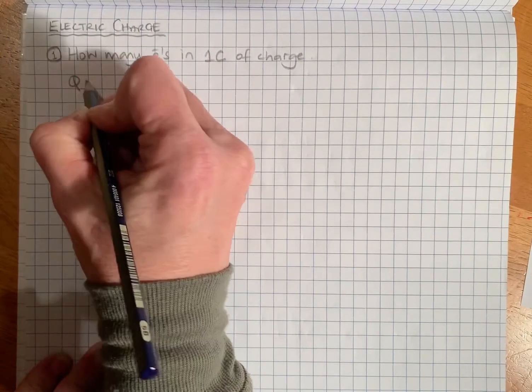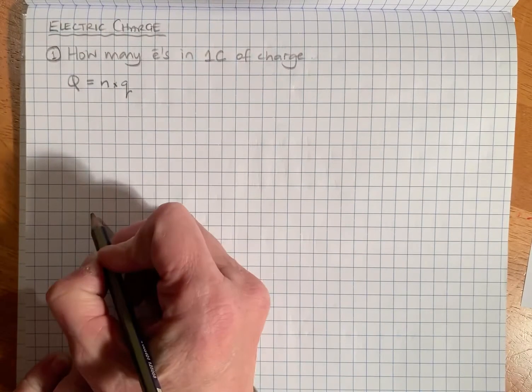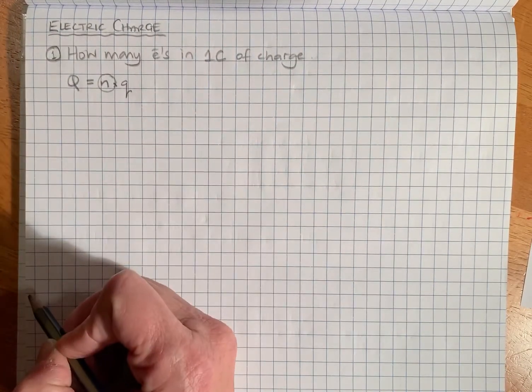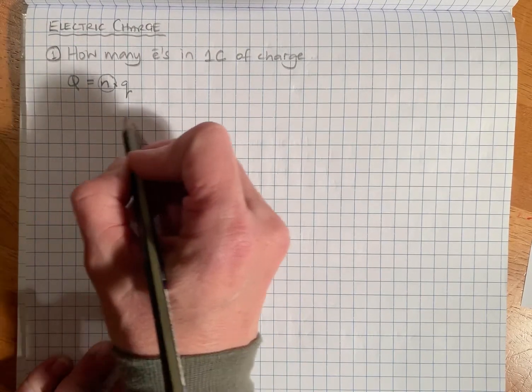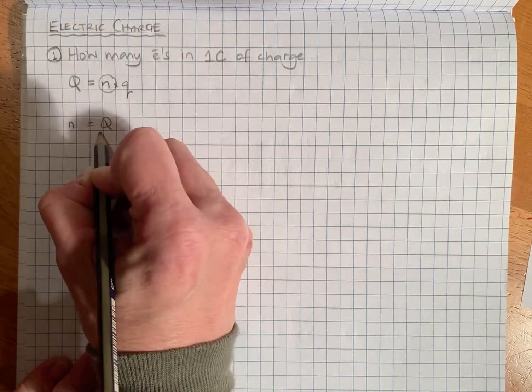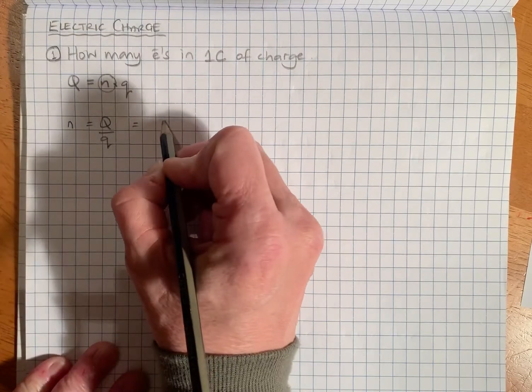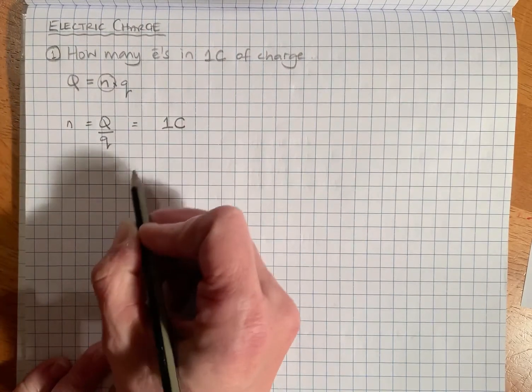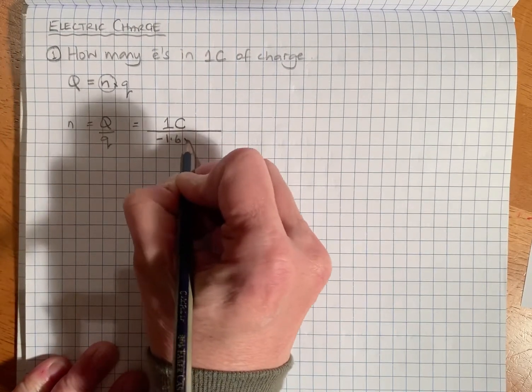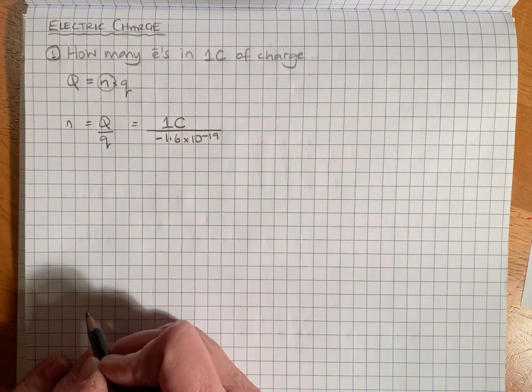We know that total charge Q is equal to the number of particles n times the charge on the particle q. This time we need to find n, how many electrons. So that means n is equal to the total charge Q over the charge on one particle. In this case the total charge is one coulomb.